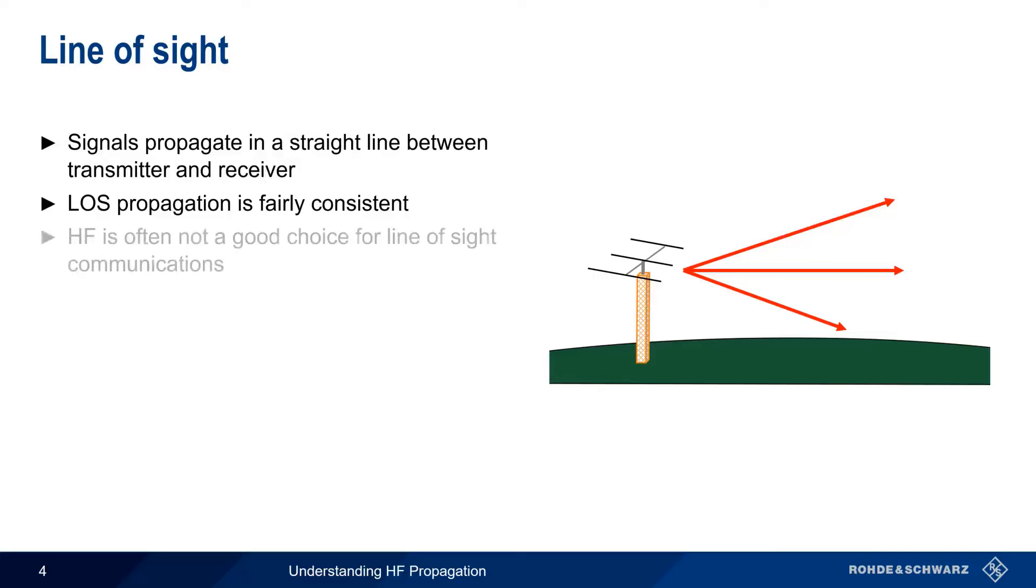That said, HF isn't a very good choice for Line of Sight communications, and it's rarely used for this purpose. Because of the lower frequencies, HF requires large antennas, and bandwidth is also somewhat limited. There also tends to be much more noise at HF compared to higher frequencies. This can be a problem because the limited bandwidth at HF usually means communications are carried out over AM or single sideband, which are much more sensitive to noise than wider bandwidth FM. For these reasons, most Line of Sight communications are carried out at VHF or higher, not at HF.